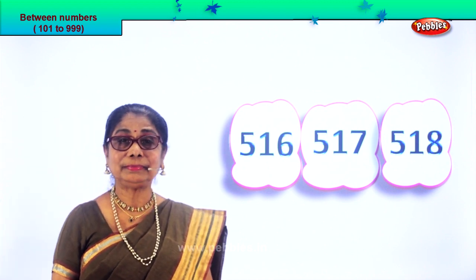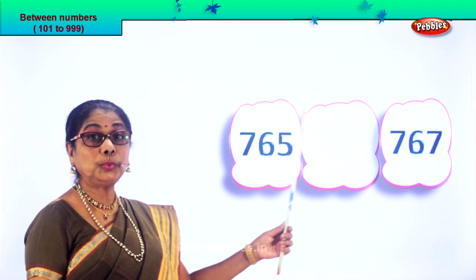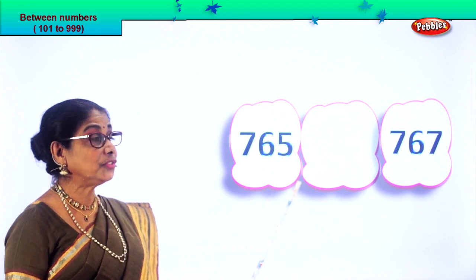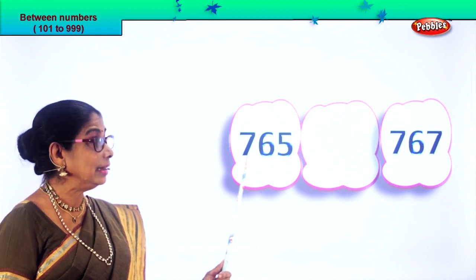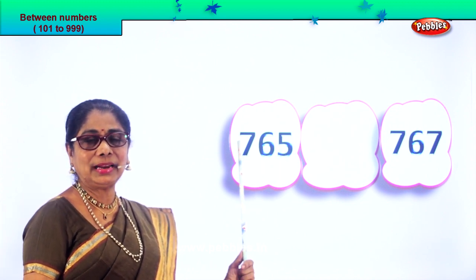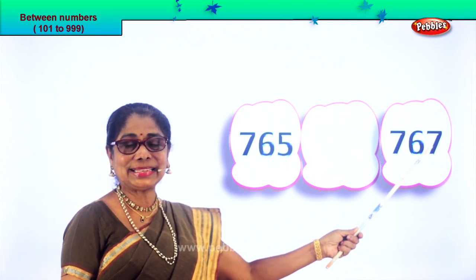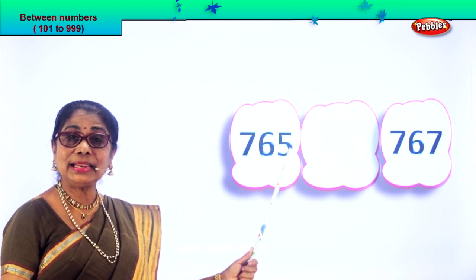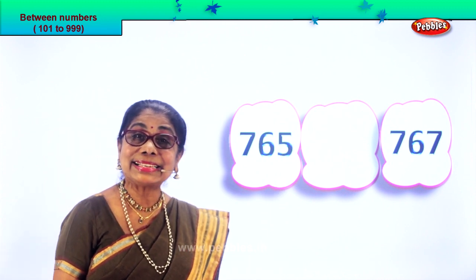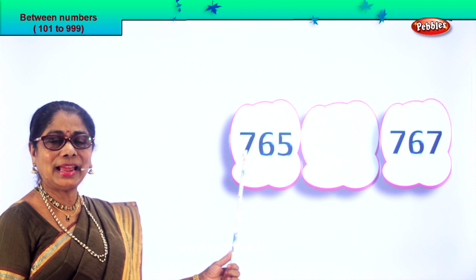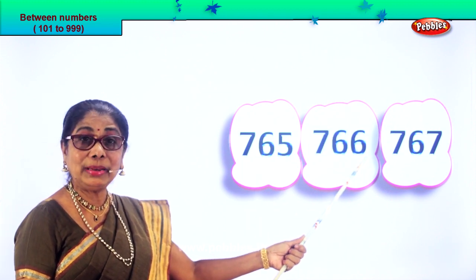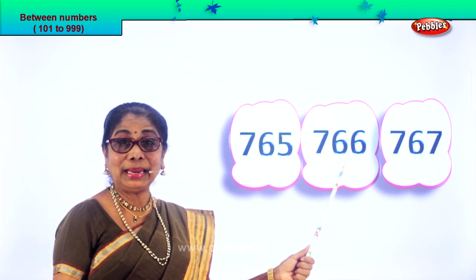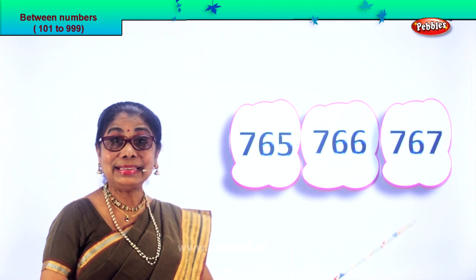Shall we go to another set of numbers? Look what we have — we are supposed to find the number between these two numbers. How do we find? First read the number: 765 and 767. After 5 comes 6, after 65 comes 66. So 765, 766, 767. The number between is 766.